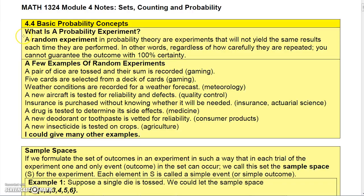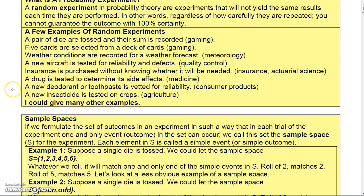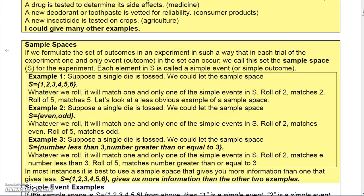So first of all, what is a probability experiment? Basically it's a random experiment. These are experiments that will not yield the same results each time they're performed. In other words, regardless of how carefully they're repeated, you cannot guarantee the outcome with 100% certainty. A few examples would be tossing dice, drawing cards from a deck, predicting the weather, testing aircraft or insurance. When you buy insurance you don't really know if you need it — drug testing, a product tested for reliability, or maybe an insecticide tested on crops. There are a lot of other examples as well.